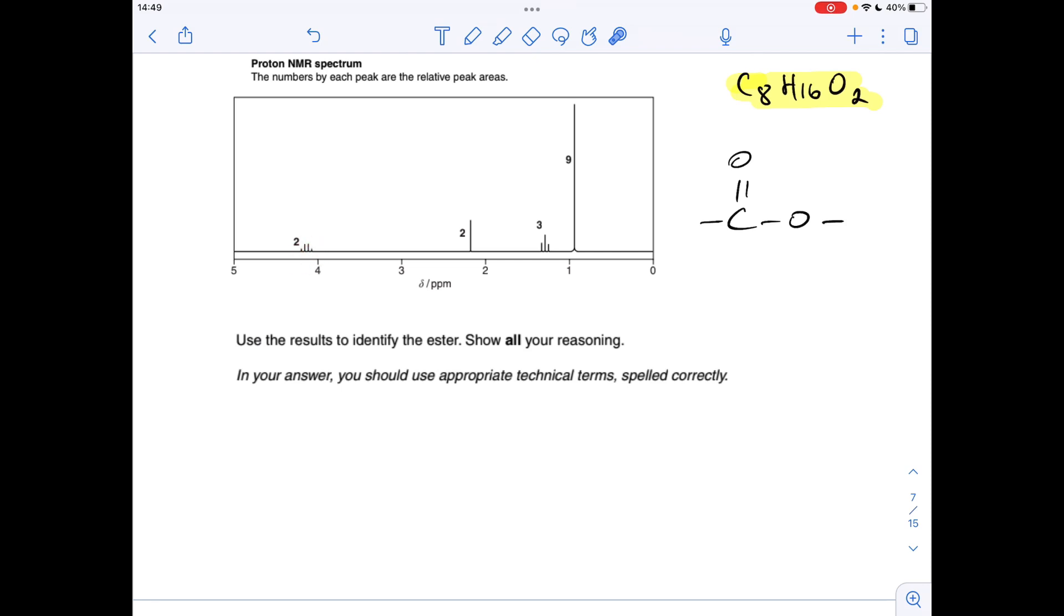Okay, so starting with this signal here at around about 4.2, you can see it's a quartet, so there's an adjacent CH3 group. It's got an area of 2, so there's 2 protons that cause this signal, and the shift value is H to C to single bond O, so obviously talking about a proton on a carbon here next to that oxygen.